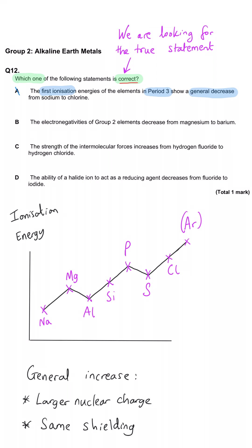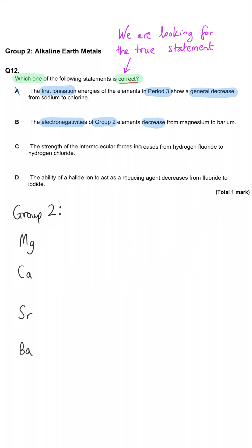B. The electronegativities of group 2 decrease from magnesium to barium. This is the correct answer.